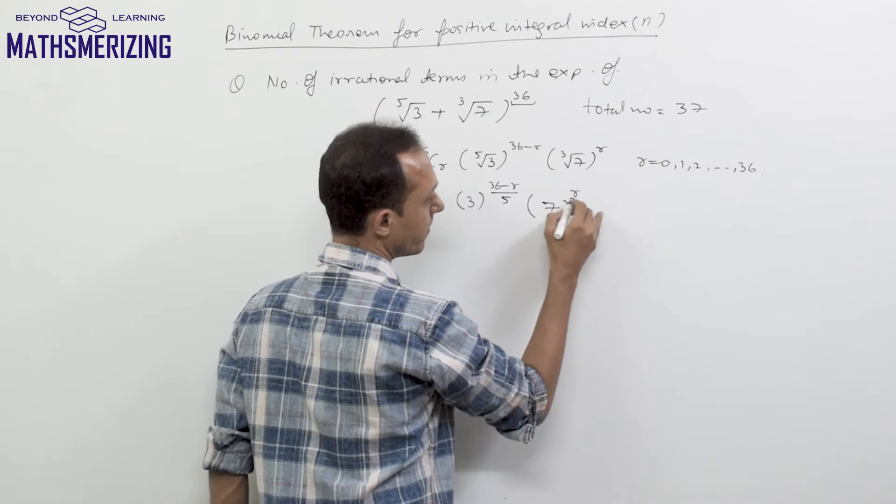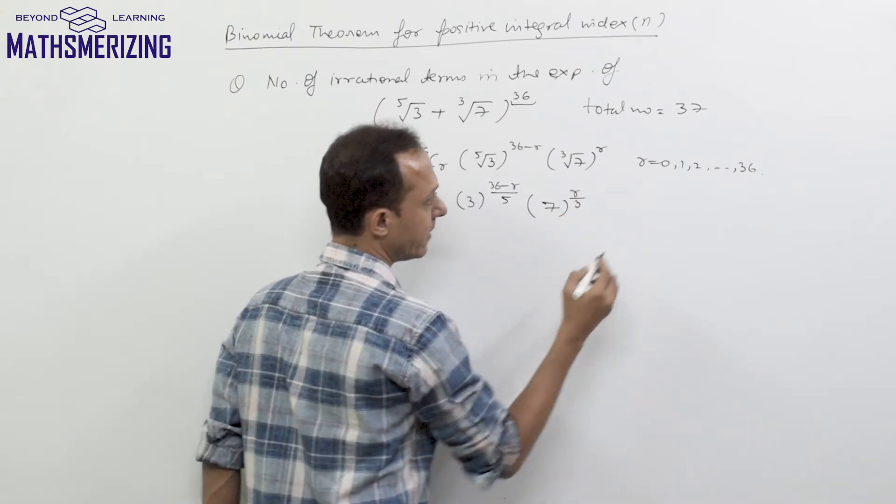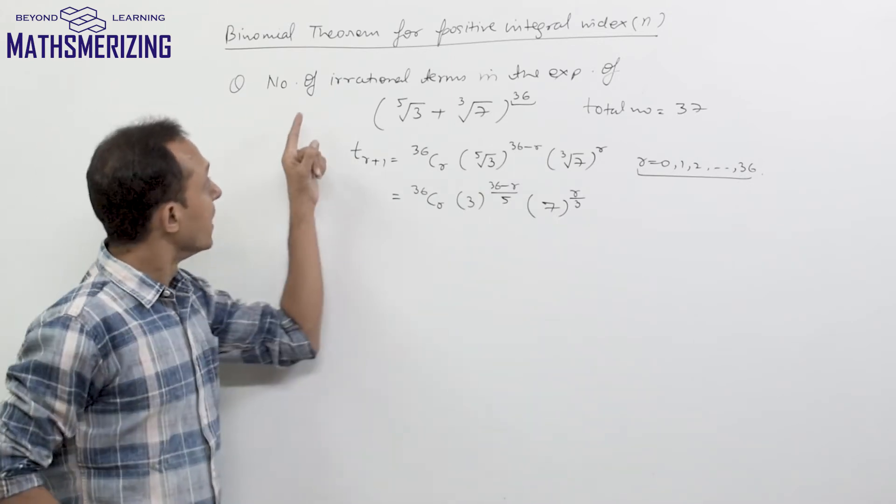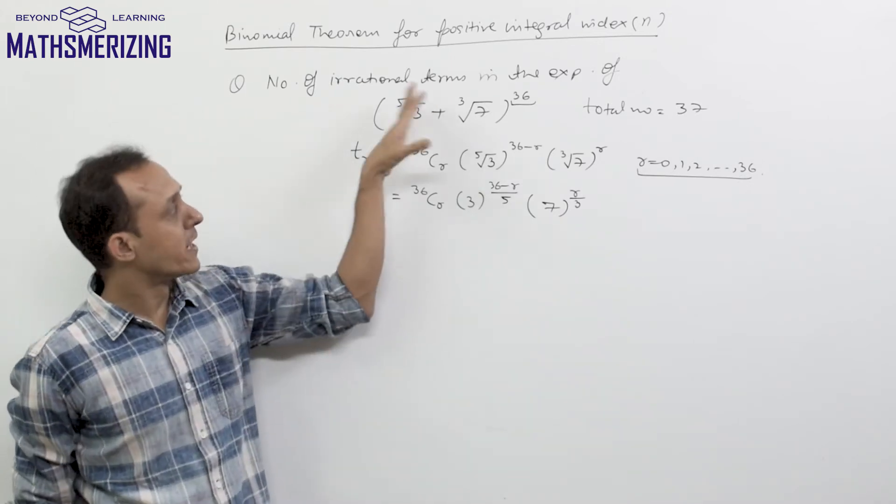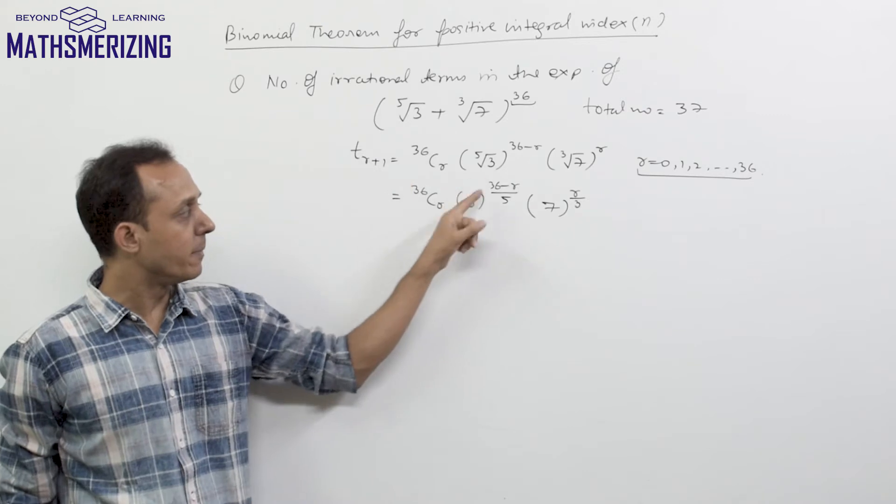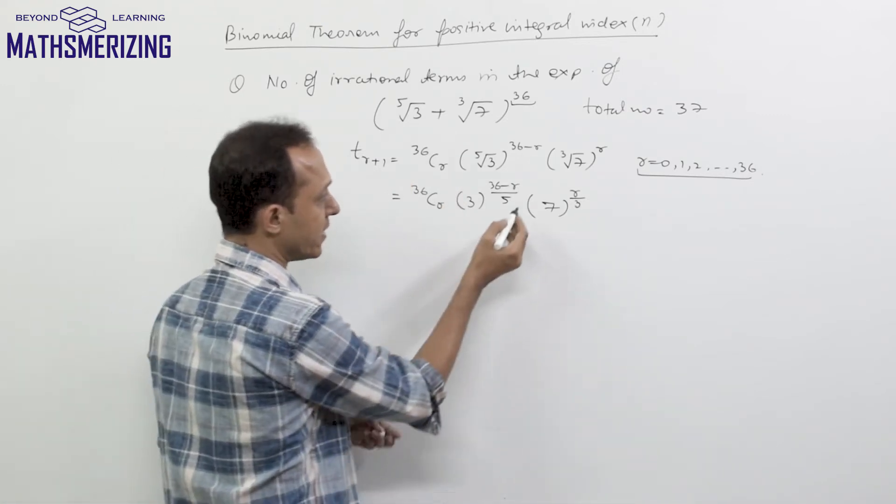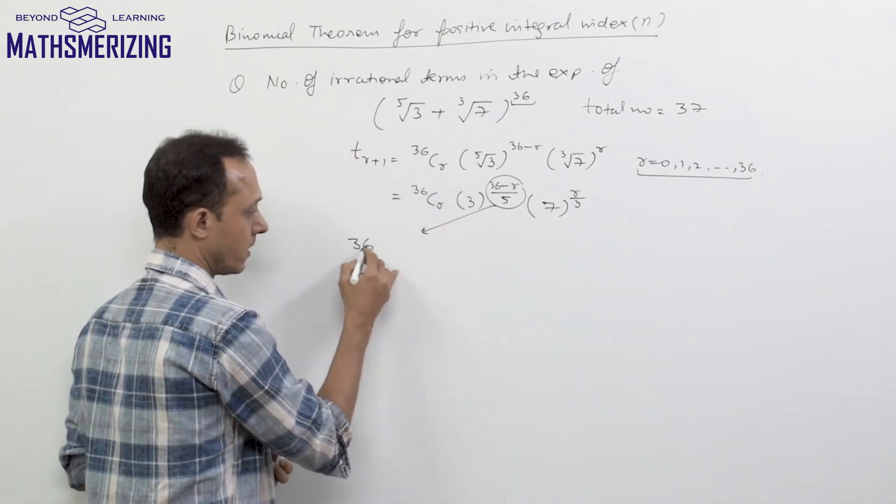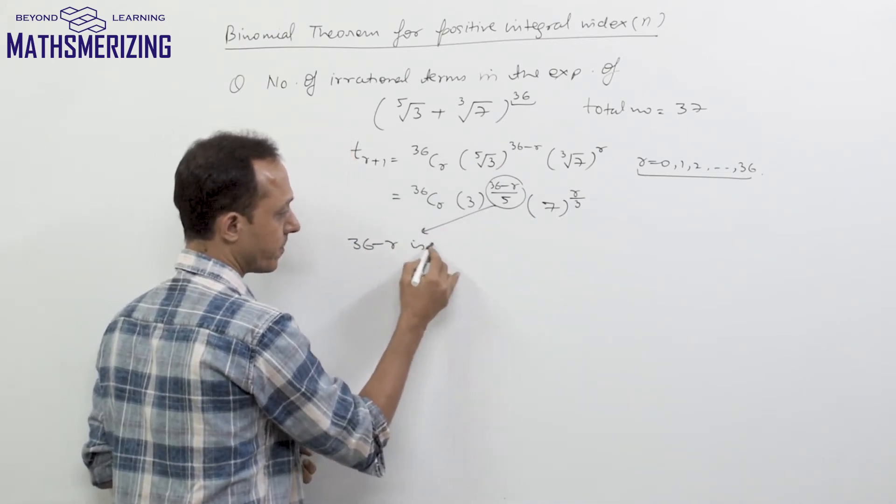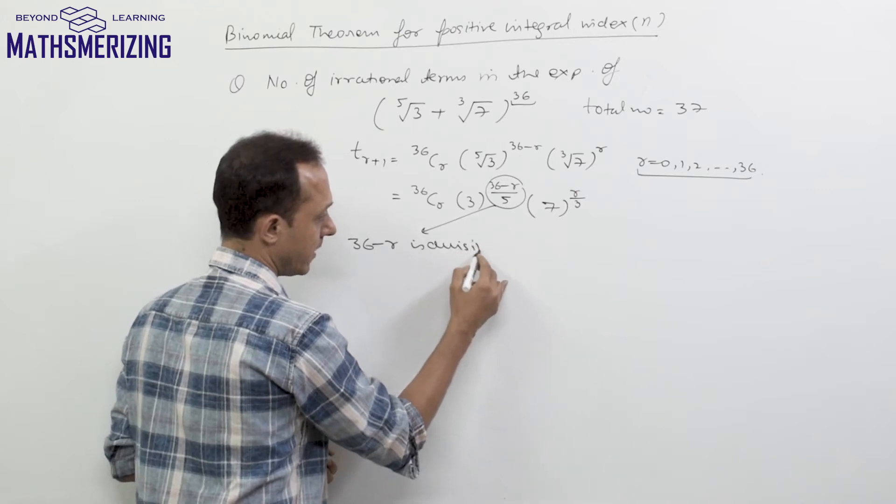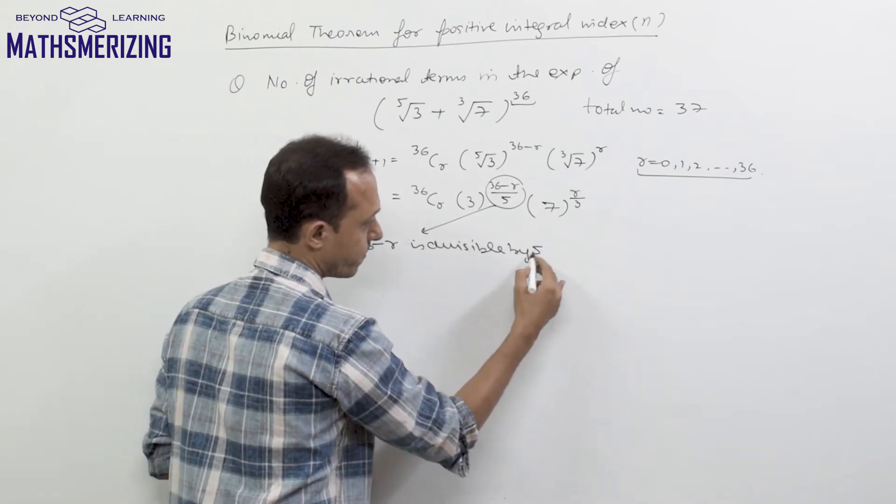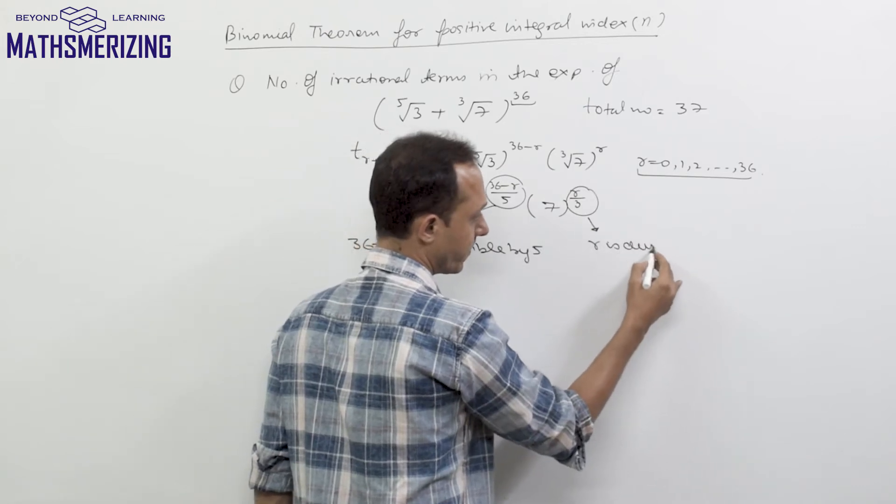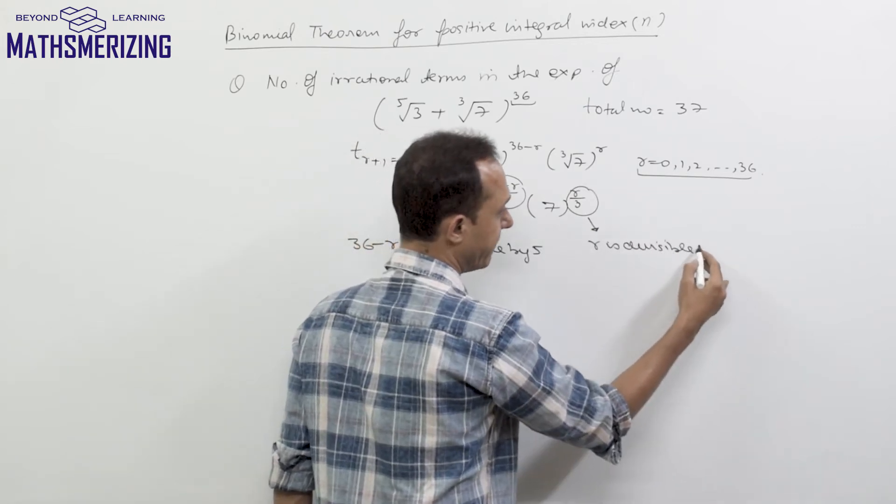Now again the value of r should lie between 1 and 36. Now I will first look for number of rational or number of integral terms because that will be easy. So this series will have integral or rational terms when 36 minus r is divisible by 5 and r is divisible by 3.